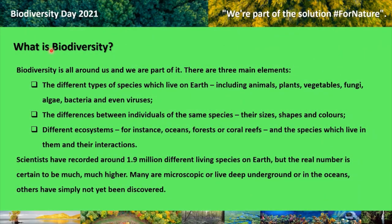What is biodiversity? Biodiversity is all around us, and we are part of it. There are three main elements to biodiversity. One: the different types of species which live on Earth, including animals, plants, vegetables, fungi, algae, bacteria, and even viruses.